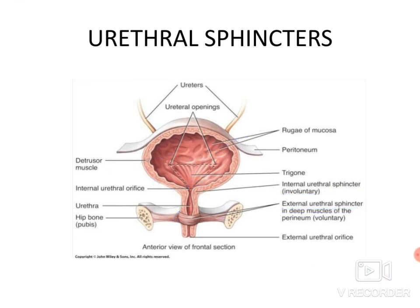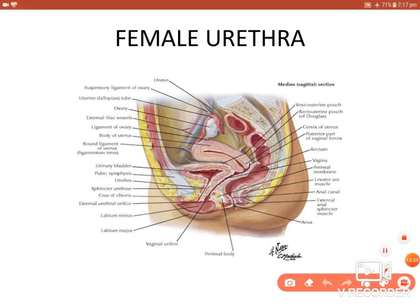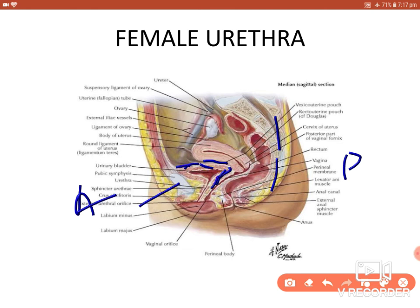Here is the sagittal view of the female pelvis, showing the anterior and posterior aspects, with the pubic symphysis and sacrum with coccyx visible. The urinary bladder shows its apex, superior surface, and base. The neck of the bladder is the internal urethral orifice. The female urethra travels through the perineal membrane and pelvic floor muscles and opens directly onto the perineum at the vestibule as the external urethral orifice. Its length is 3 to 4 centimeters.